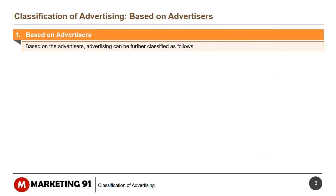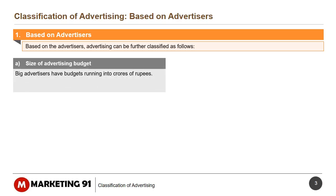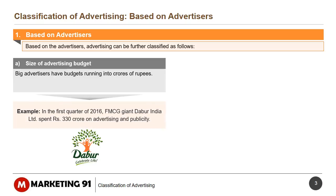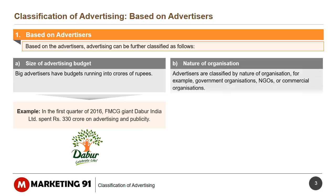Based on Advertisers, advertising can be further classified as follows. The first is depending on the size of the budget. Big advertisers have budgets running into crores of rupees. For example, in the first quarter of 2016, FMCG giant Darbar India Limited spent Rs. 330 crore on advertising and publicity. The second classification is based on the nature of the organization — for example, government organizations, NGOs, or commercial organizations.